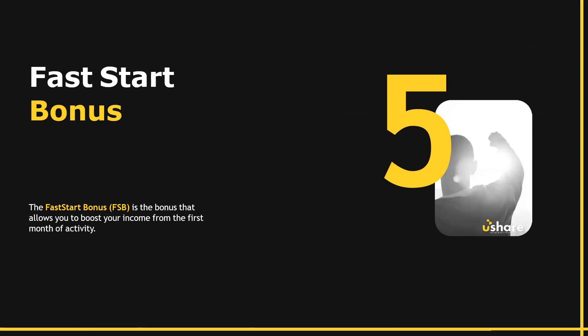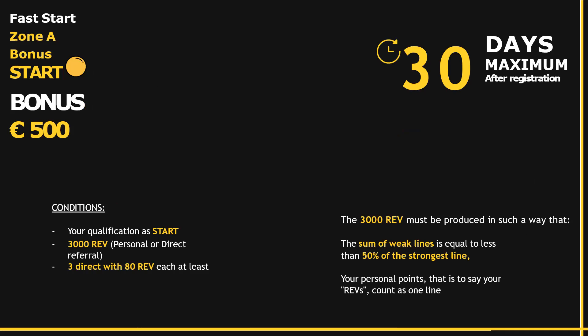Now let's talk about the fast start bonus — the bonus that allows you to boost your income from day one. It's really for people that know how to hit the ground running. If within the first 30 days after registration you qualify as a star with 3,000 REV and three directly sponsored people who also purchased a U-Card with a minimum of 80 REV, you get 500 euros.